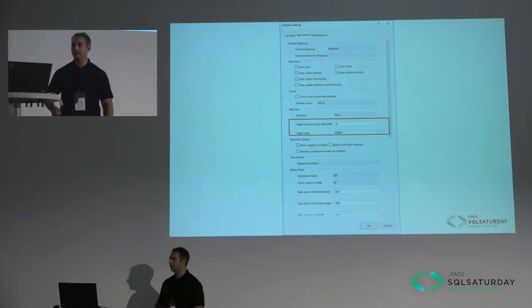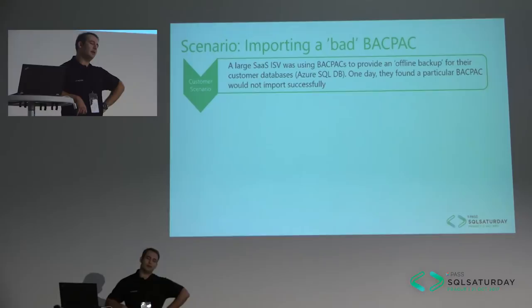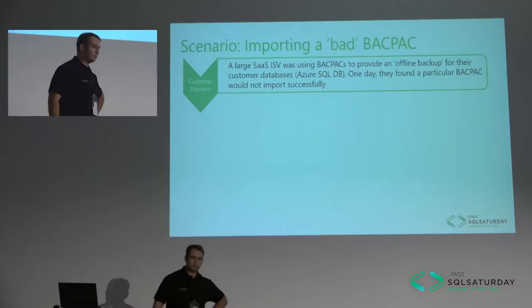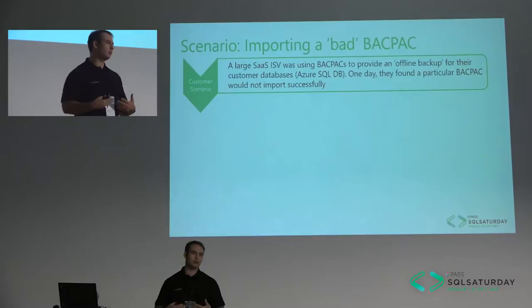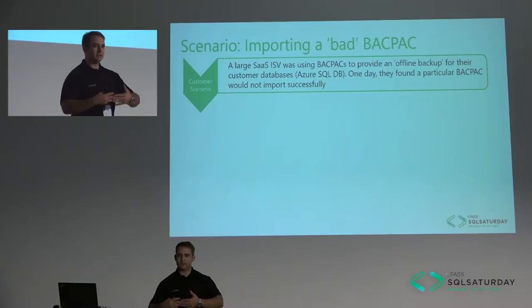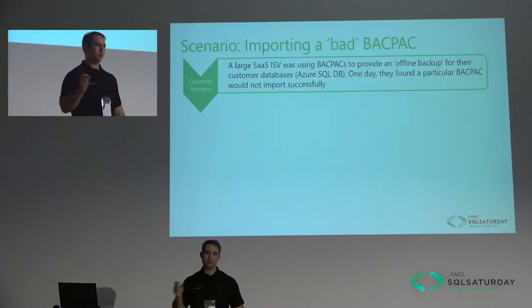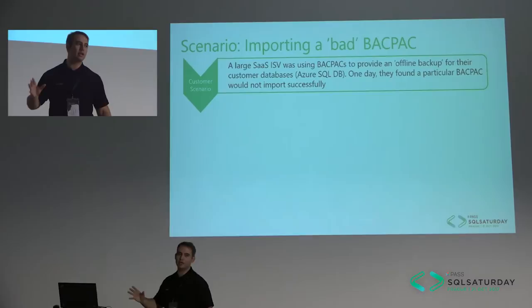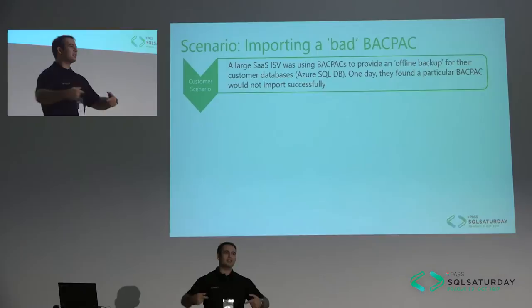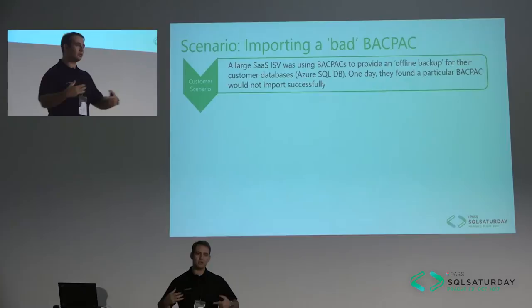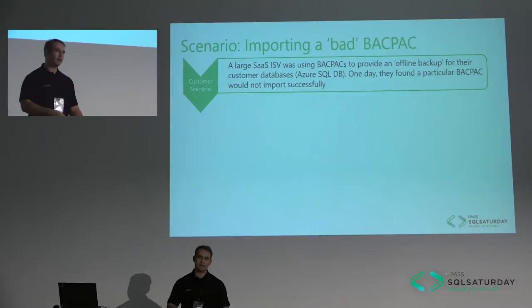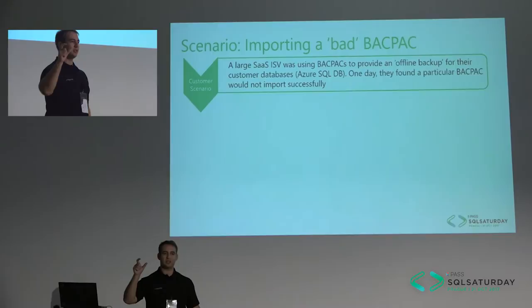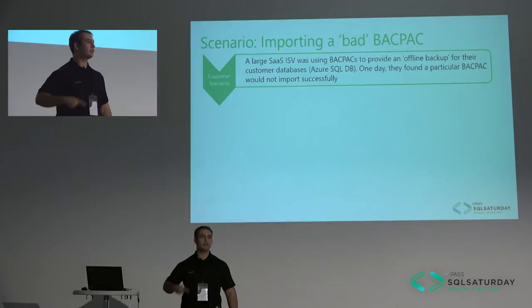A large ISV vendor tried to deploy a database but got a message saying it couldn't deploy because of duplicate names in the constraints. It turns out their developers added default constraints without naming them - you can do that in SQL Server. So you define your constraints, they have the same auto-generated name, and still you need to deploy. Option one: rewrite your database application so it has explicit names. Or define a deployment contributor that sees each constraint and creates a unique name for it. Every time it sees a constraint, it creates a new name.